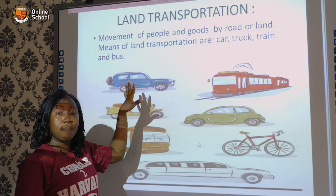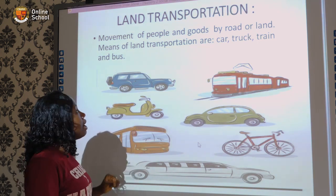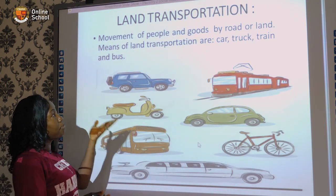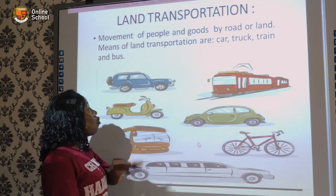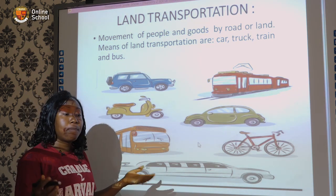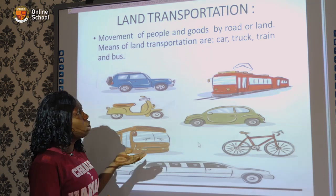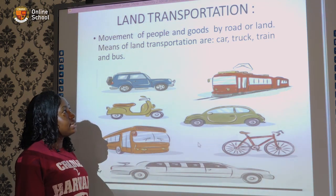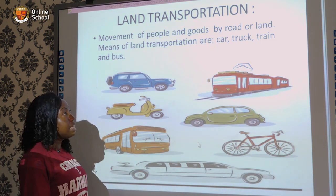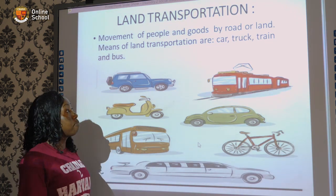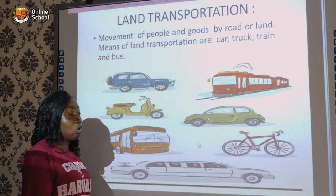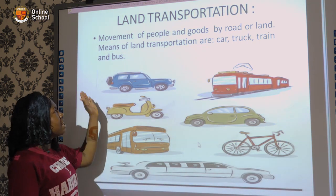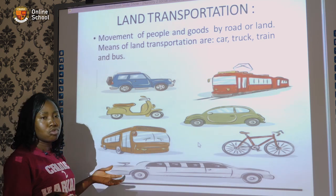We're going to look at transportation by land. This is the movement of people and goods by road or land. You see where I'm standing — this is land — so it simply means movement of people or goods on land.